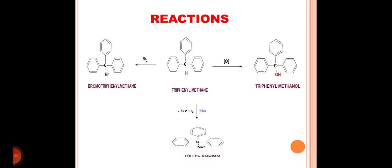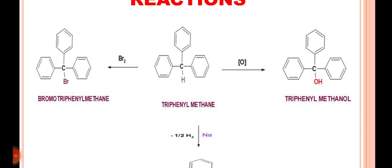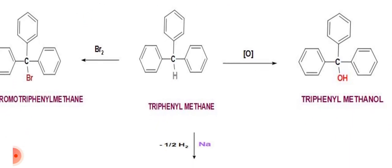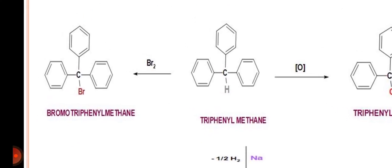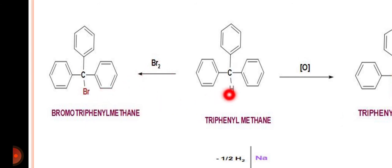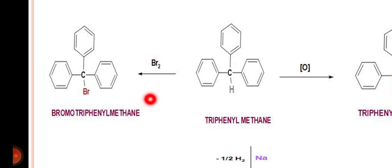Now for the reactions — very few reactions of triphenylmethane are known. Triphenylmethane reacts with bromine in the presence of ultraviolet light, undergoing a free radical substitution reaction with the liberation of HBr, and one bromine gets attached on the benzylic carbon.